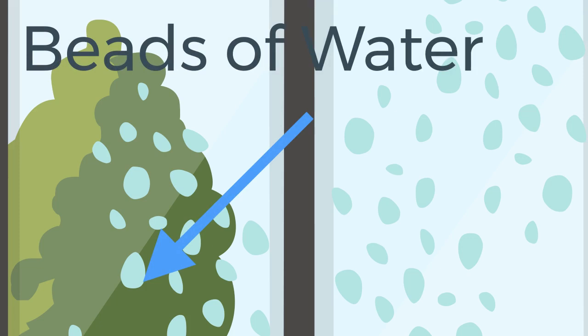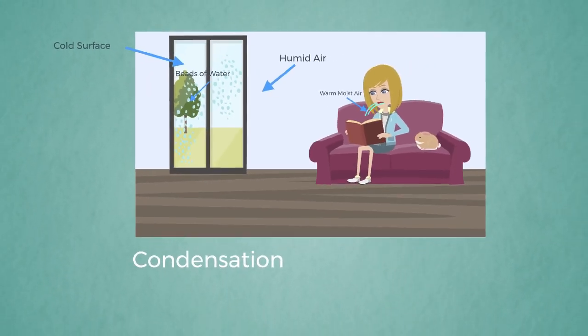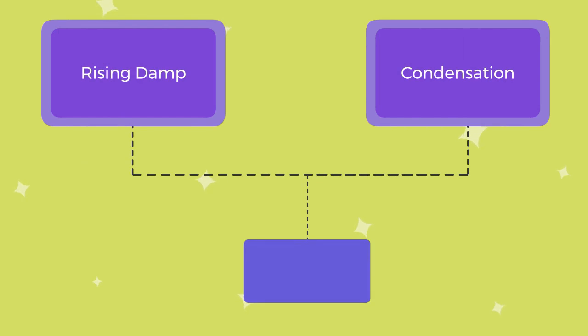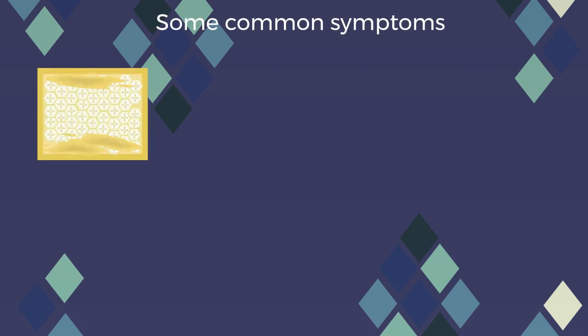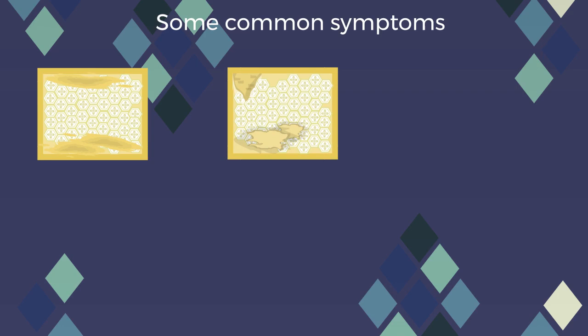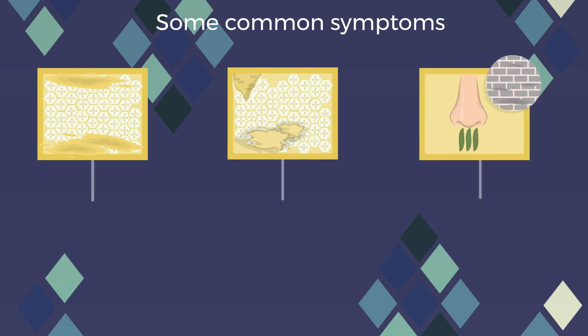Difference number two: what do they look like? The biggest problem in telling these two types of damp apart is that some of the symptoms can appear very similar. For example, damp problems such as stains on walls, peeling wallpaper, and mustier damp smells are not unique to either rising damp or condensation.